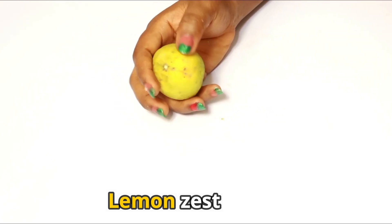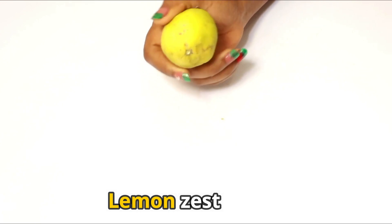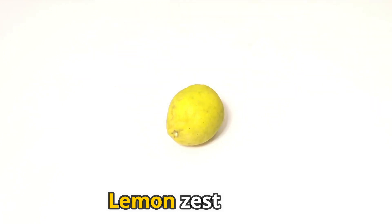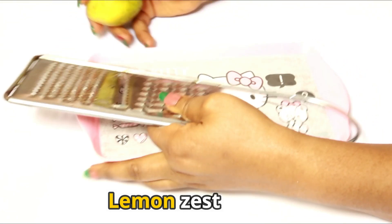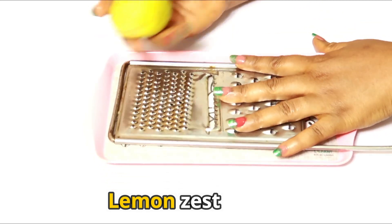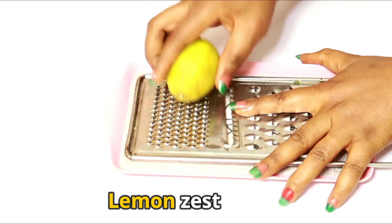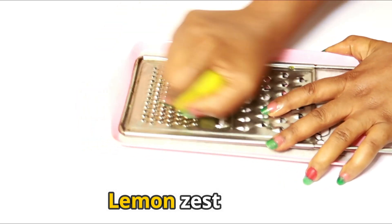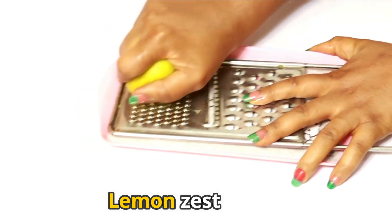So what you're going to do, you're going to be needing the zest of this lemon and also the lemon juice. The zest is the back of the lemon which I'm going to be using a grater and extract it. So you're going to basically do it like this.